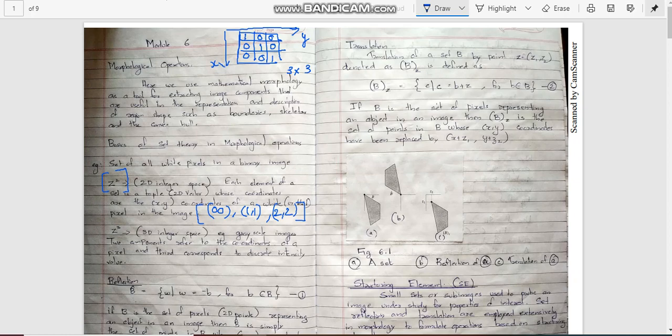Now, coming to three-dimensional integer space. Here, along with the coordinates, we have a third component that represents the intensity or grey level value. If it is a 3-bit image, the values range from 0 to 7. Let it be 3. This is a component, coordinate followed by integer value.